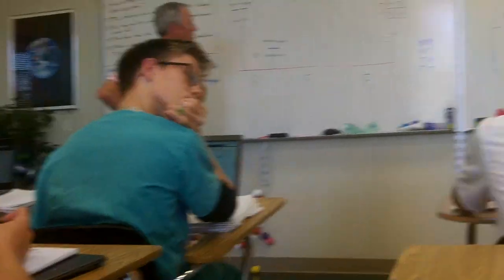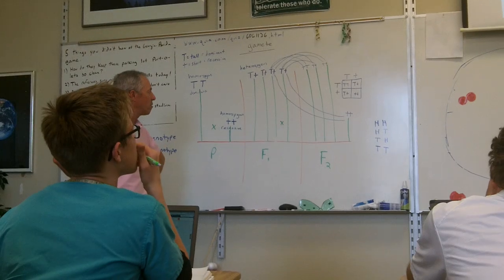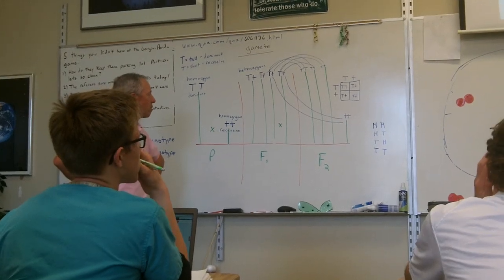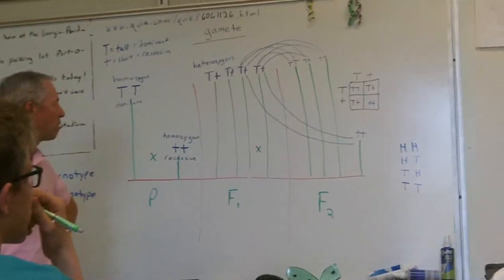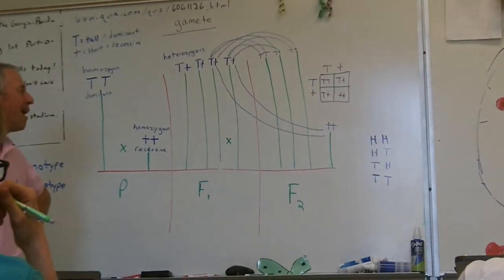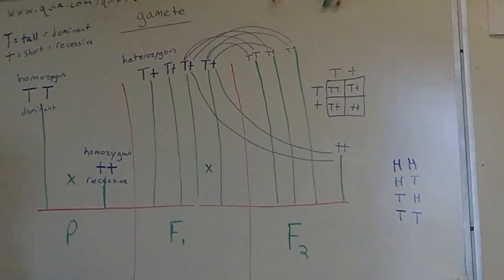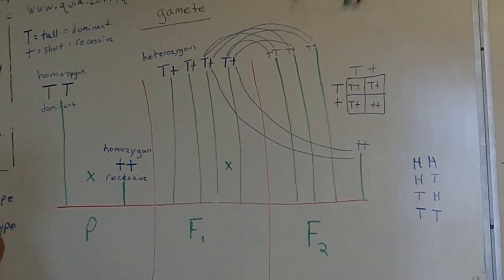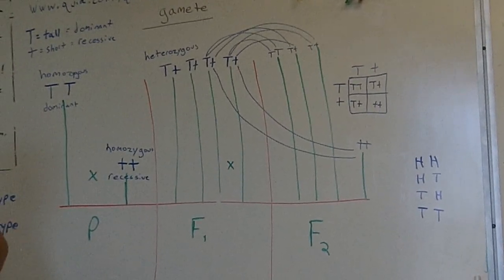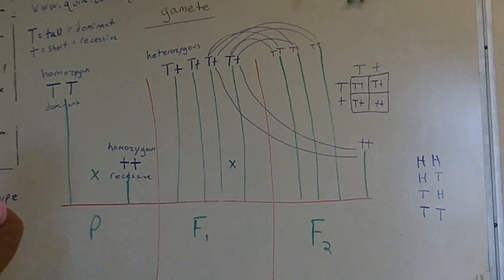Why does the big T always come first? That's just how they do it — you put the dominant one first. It kind of shows that it dominates over the other one.